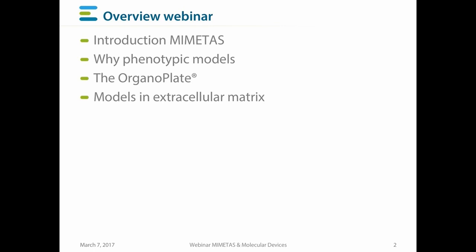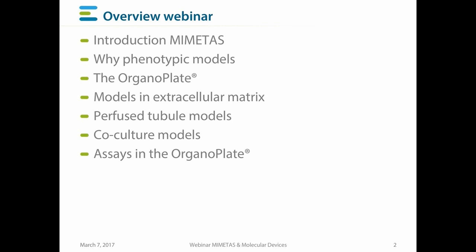I'm going to show you a couple of examples on models that we develop in organoplates, such as models made up with cells which grow inside an extracellular matrix. Then we'll move on to our unique perfused tubule models, where a tubule of epithelial or endothelial cells grows against an extracellular matrix, and the perfusion flow goes through the lumen of the tubules. When we combine those models, we get co-cultures — either of two adjacent tubules or a tubule next to cells in an extracellular matrix — to create higher level complex tissue models.